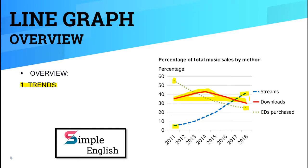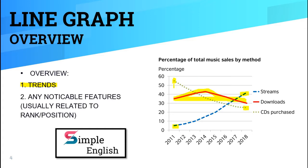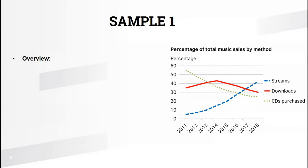If the end of the line is higher than the beginning, it is an upward trend. So the first thing to mention is the trend. The second thing is any noticeable features, which are usually related to the rank or position of a line — for example, a line that was in last position and then became first. That kind of change is a noticeable feature you can write about.